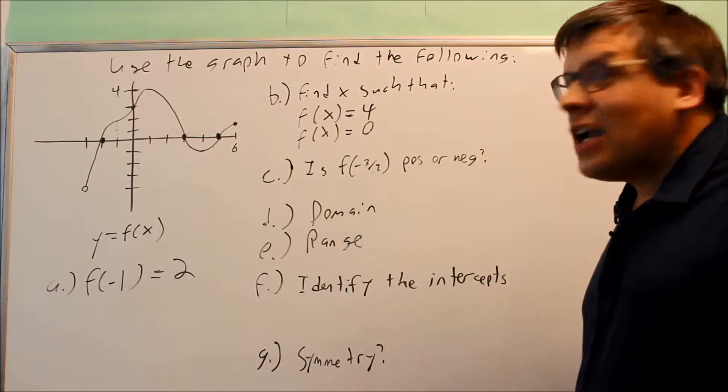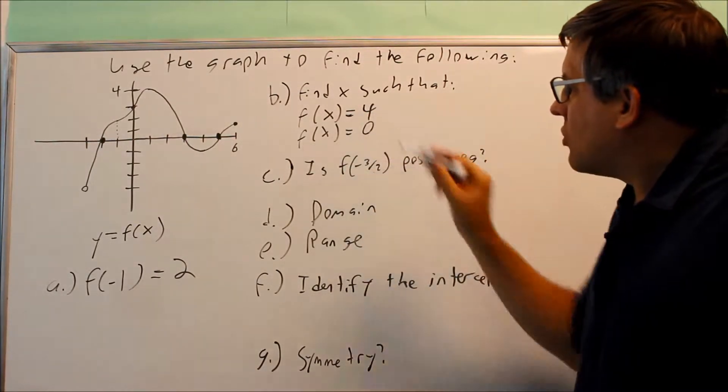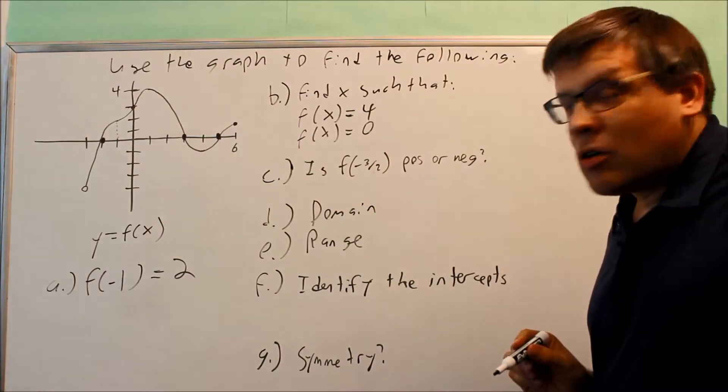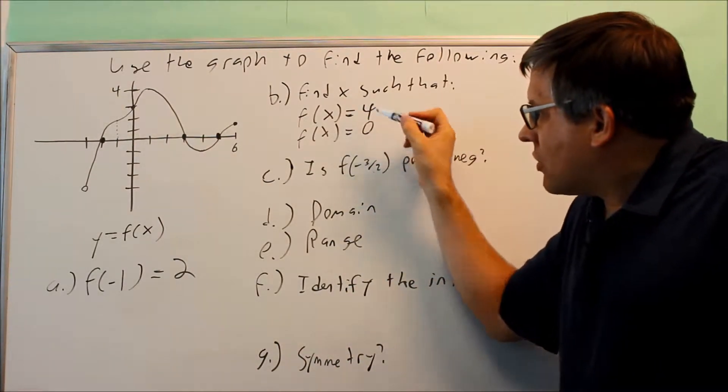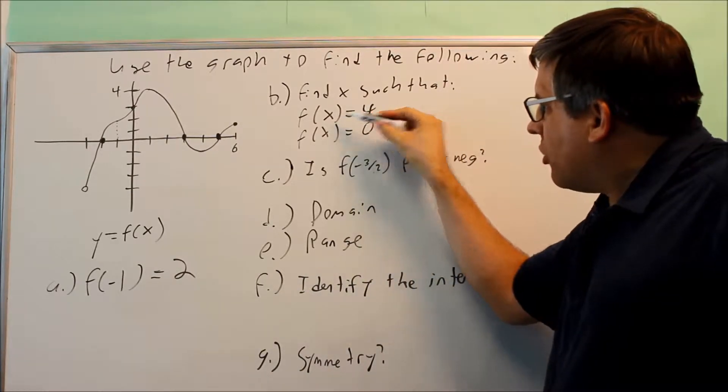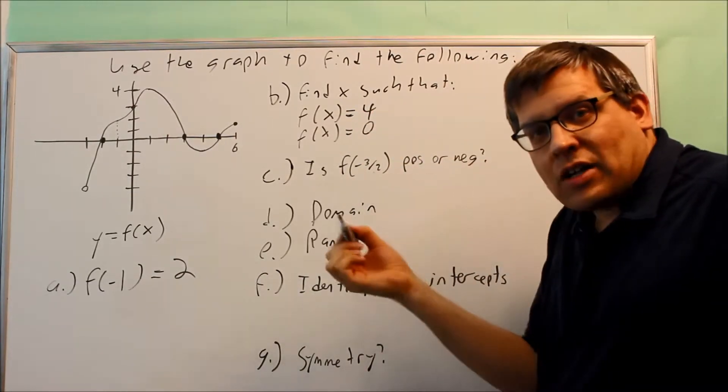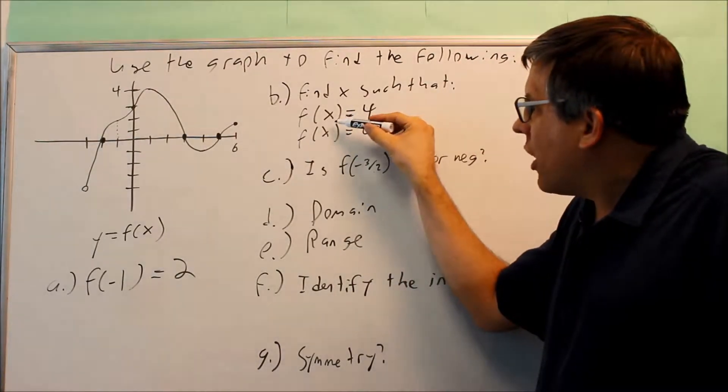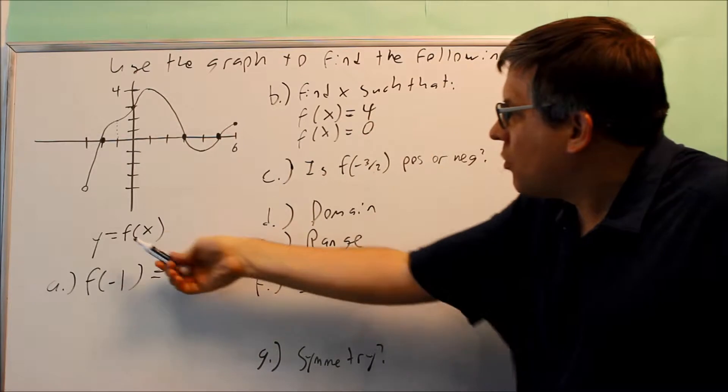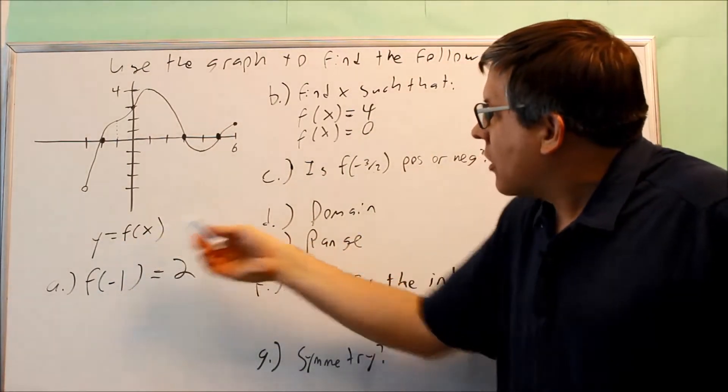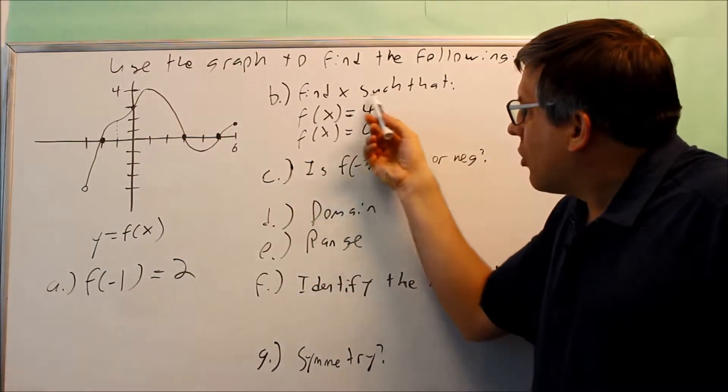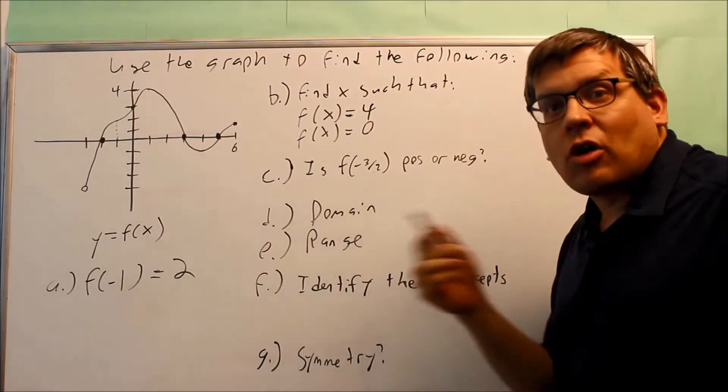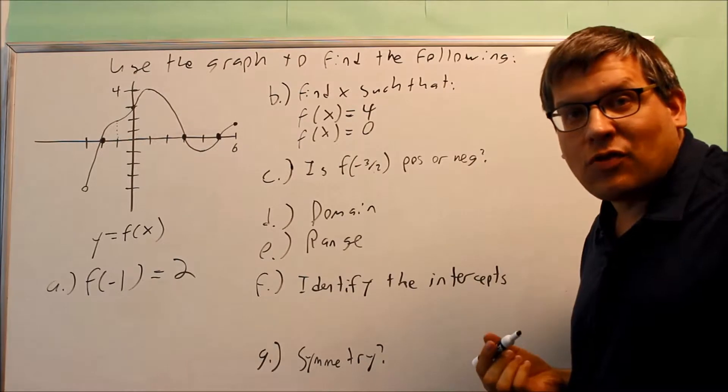Next, it says find x such that f of x is equal to 4, and we're also going to do f of x equals 0. So for this, it's saying that what x value is going to give us a y value of 4. It's kind of asking the reverse question of the last one. So now it's asking what x will make this correct, because remember y equals f of x. So if I have a number after the equal sign, that's actually the y value. So it's actually giving me a y value to start with. I want to find the corresponding x value.